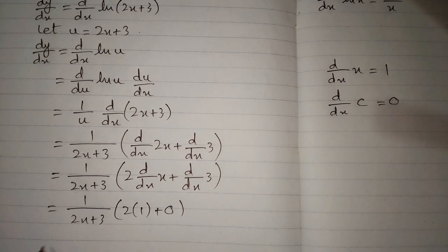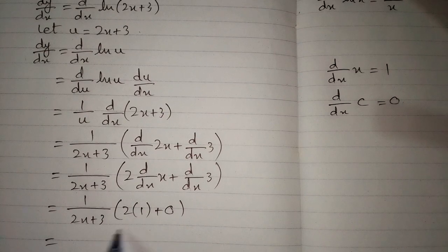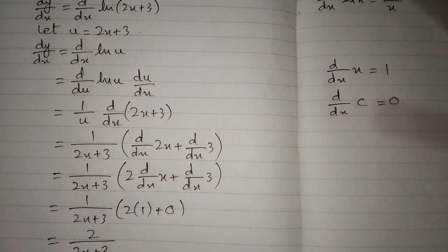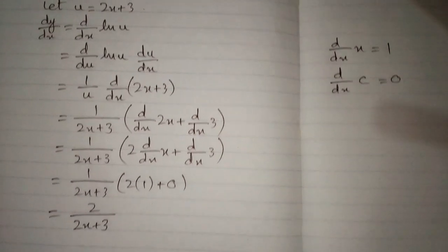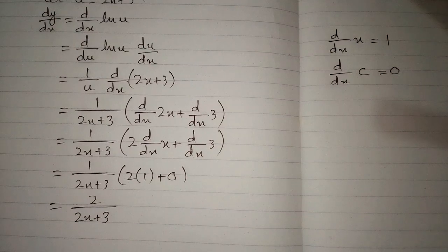Now 2 times 1 is 2, plus 0 is again 2. So the answer is 2 upon 2x plus 3. The required answer is 2 upon 2x plus 3.